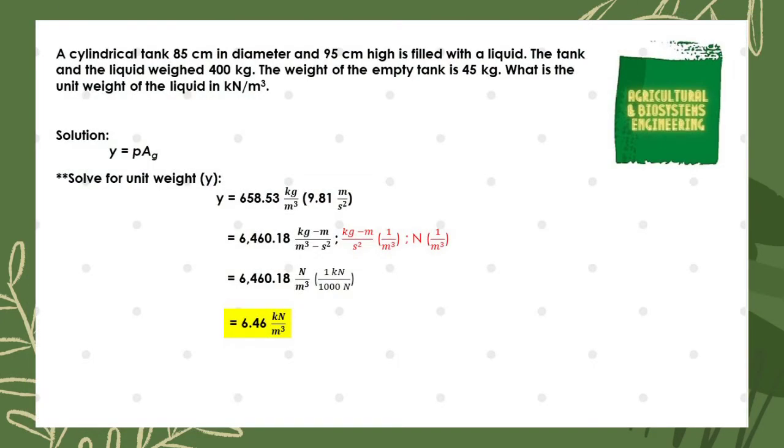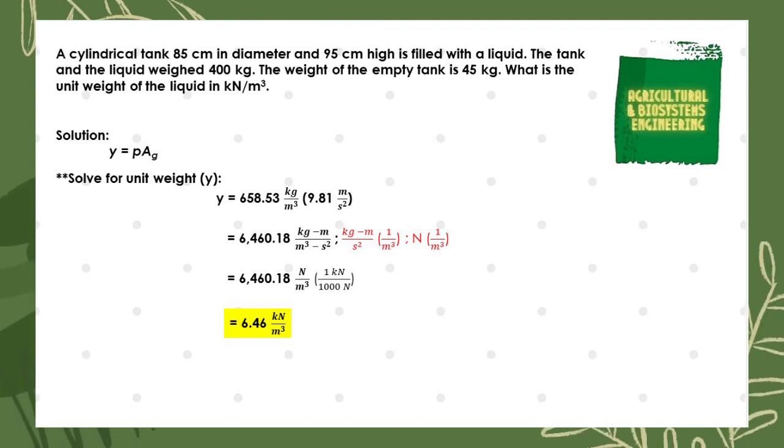With this value of our density, we can now solve for our unit weight or specific weight. We just go back to our general formula: specific weight equals the product of density and acceleration due to gravity. We just directly substitute all of our values for our formula since we already know the values.